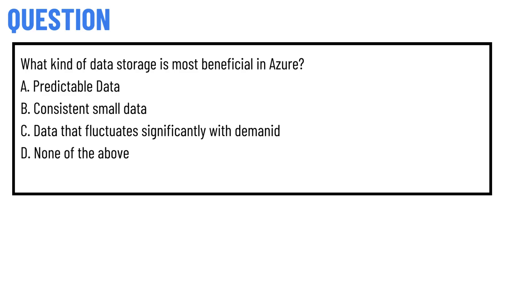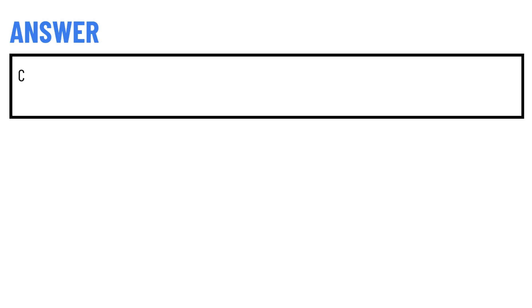What kind of data storage is most beneficial in Azure? Option A: predictable data. Option B: consistent small data. Option C: data that fluctuates significantly with demand. Option D: none of the above. The correct answer is Option C.